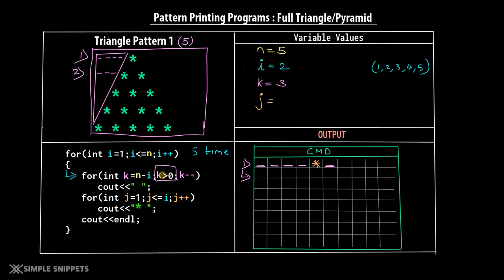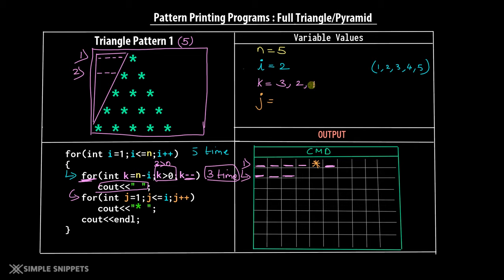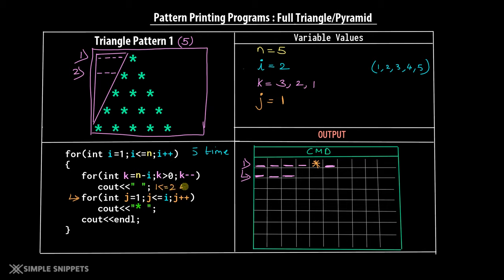With i equal to 2, the print loop starts with j equals 1, condition j less than or equal to 2. So j takes values 1 and 2 — the loop runs 2 times. First iteration: a star and a space are printed. Second iteration: another star and space are printed. When j becomes 3, the condition 3 less than or equal to 2 is false, so we exit the loop, print a new line via cout endl.